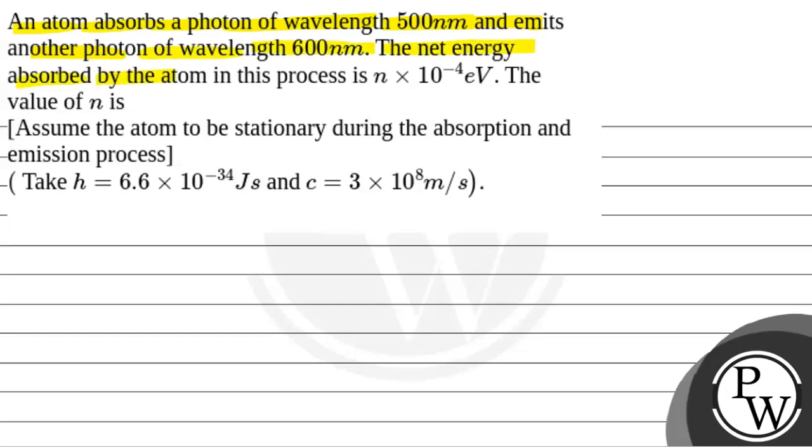The net energy absorbed by the atom in this process is n into 10 to the power minus 4 electron volt. The value of n is what we need to find. Assume the atom to be stationary during the absorption and emission process. Take h equal to 6.6 into 10 to the power minus 34 joules second and c equal to 3 into 10 to the power 8 meter per second. So we will solve this question.